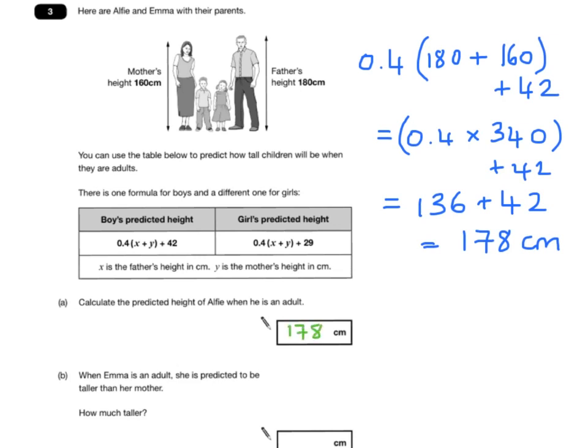Now, Emma, you need to read the question carefully. Emma, when she's an adult, she's predicted to be taller than her mother. Well, how much taller? Let's use the girls' predicted height formula.